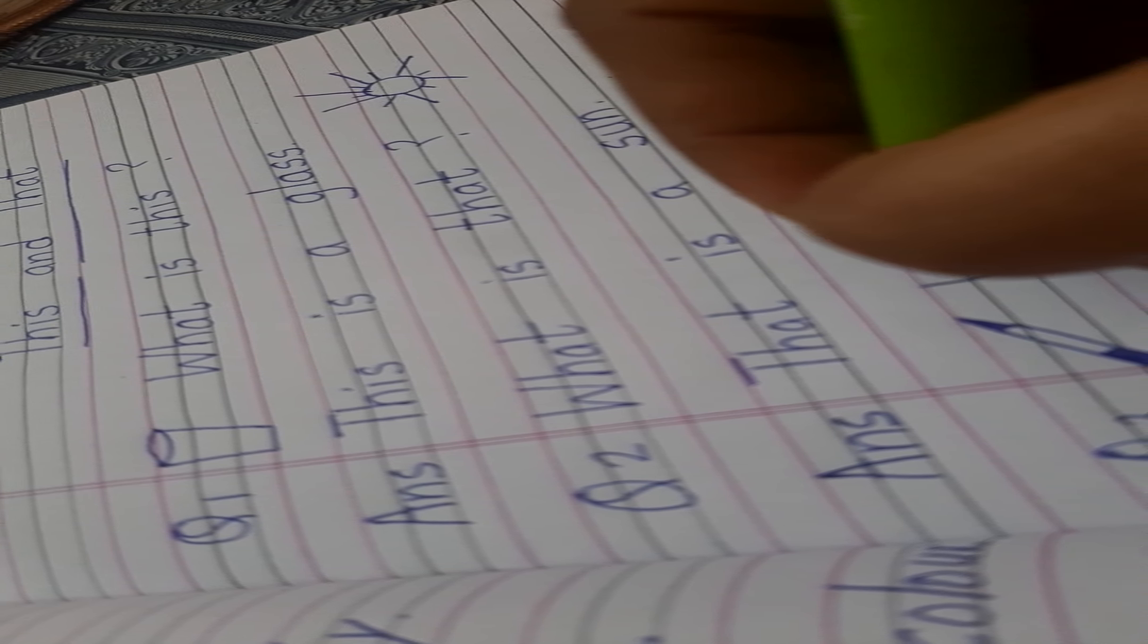Question number three: What is this? You have to be aware of the last word. We will start with the last word. If this is given, answer will be this. If that is given, answer will be that. What is this? This is a pencil.